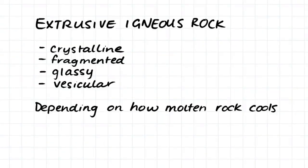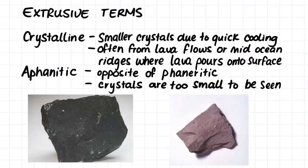Extrusive igneous rock can take a few forms including crystalline, fragmented, glassy, and vesicular. Crystalline extrusive igneous rock forms when molten rock spills out onto the earth's surface. This formation process means that we have much smaller crystals due to the very quick cooling of the molten rock. We often get this from lava flows or mid-ocean ridges where the lava is able to pour out onto the surface of the earth and not do so explosively. This type of formation creates aphanitic rock, which is the opposite of phaneritic, meaning the crystals are too small to be seen.